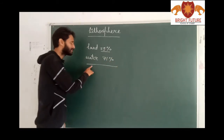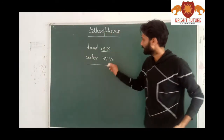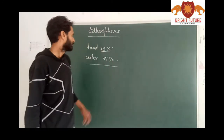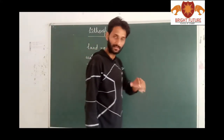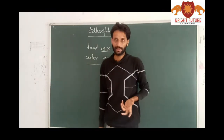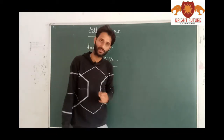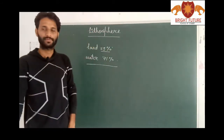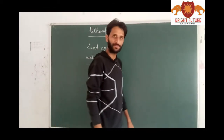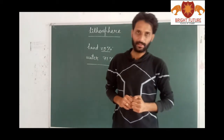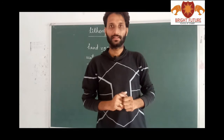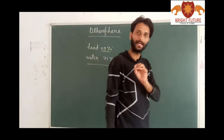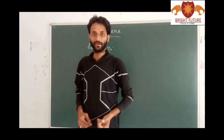Water covers the remaining 71% area of the earth. So 71% of the earth is covered by water and only 29% is land. The solid outermost layer of the earth, which is made up of rock and minerals, is called lithosphere. The lithosphere includes all types of land masses. The large land masses are called continents, and the large water bodies are called oceans.